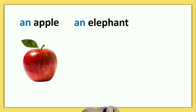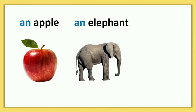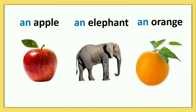So when we start with vowels, we use AN. For example: an apple, an elephant, an orange. When a word starts with a vowel like O, we use AN.